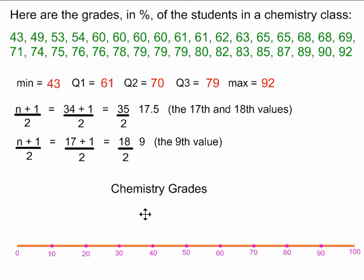Now we have to build our box and whisker plot. We need to put little dashes above the x-axis at all of these values: the min, the Q1, the Q2, the Q3, and the max of 92. So I build these dashes and place them at 43, 61, 70, 79, and 92. And that's where they are now.